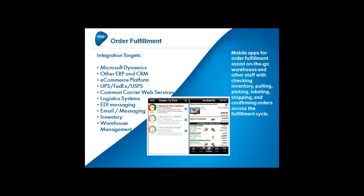Mobile apps for order fulfillment assist warehouse staff and others with checking inventory, pulling, picking, labeling, shipping, and confirming orders across the whole fulfillment cycle. Integration targets include ERP and CRM, e-commerce, logistics apps, and also specialized inventory systems and warehouse management systems. For logistics apps, the focus is on transportation, warehouse management, and order fulfillment. They rely on CRM data for customer information, and CRM systems need logistics data for a complete view of the customer.